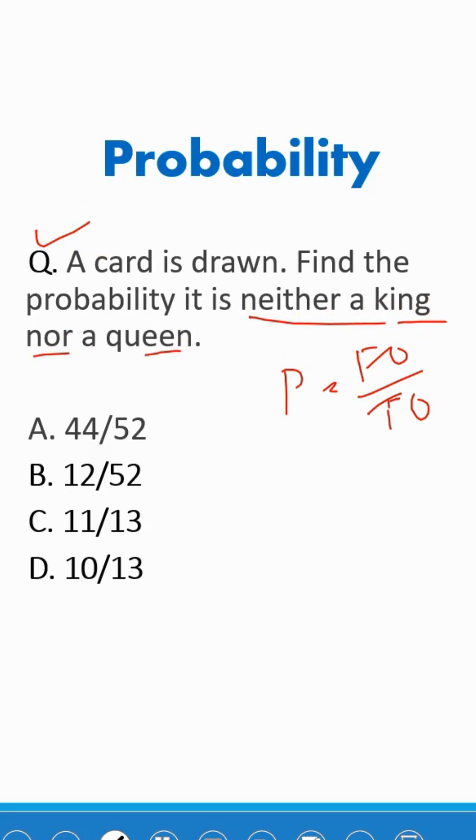In a card deck we have total 52 cards, so our total outcome is 52. Now we don't want king nor queen. There are total four kings and four queens, so total there is eight combinations, but we don't want this. So out of 52, we don't want this combination. So our favorable outcome is 44. The answer is 44 by 52.